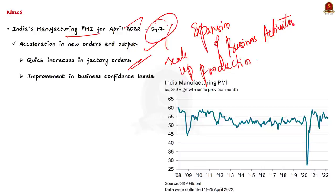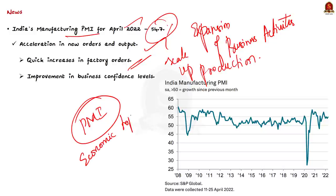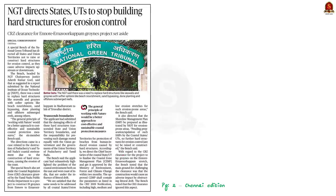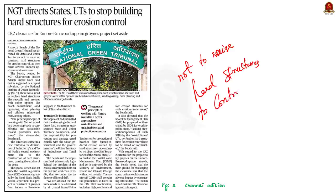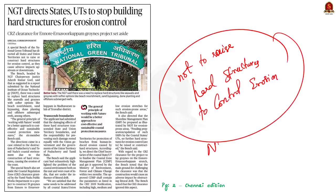The next news article says that a special bench of the National Green Tribunal has directed all states and union territories not to raise or construct hard structures for erosion control, as they can cause adverse impacts on upstream or downstream areas. According to a report by the National Institute of Ocean Technology (NIOT), there is a need to replace hard structures like sea walls and groynes with softer options like beach nourishment, sand bypassing, dune planting, and offshore submerged reefs. In this context, let us learn about the National Green Tribunal from a prelims perspective.